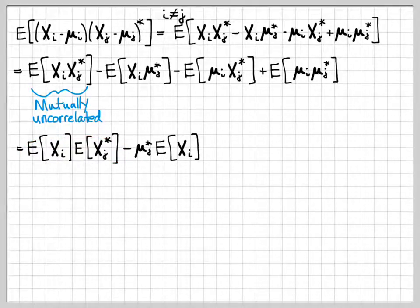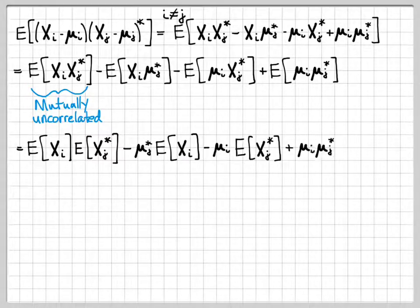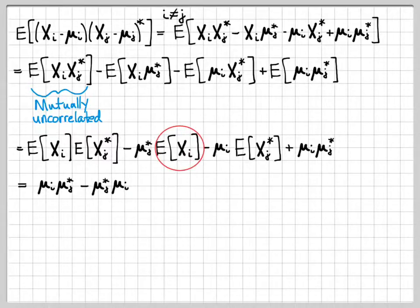We've simplified this based on the fact that these are mutually uncorrelated. Then we can continue simplifying these terms. μj star is a constant, so I pulled it out. On the next term, μi is a constant, so I pulled it out of the expectation. Finally, this last term, μi and μj are both constants, so the expectation operator just goes away. Now this is pretty easy. The expected value of Xi is μi, the expected value of Xj star is μj star. The expectation of Xi is μi, the expectation of Xj star is μj star. I can just write all these down.